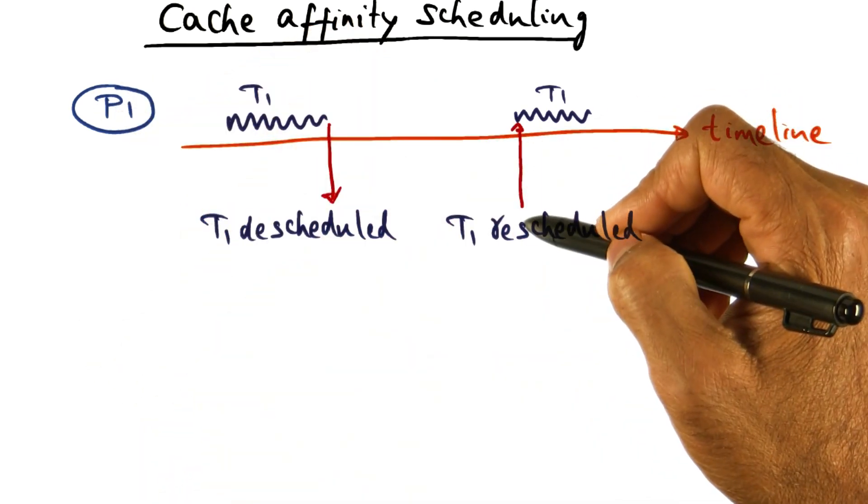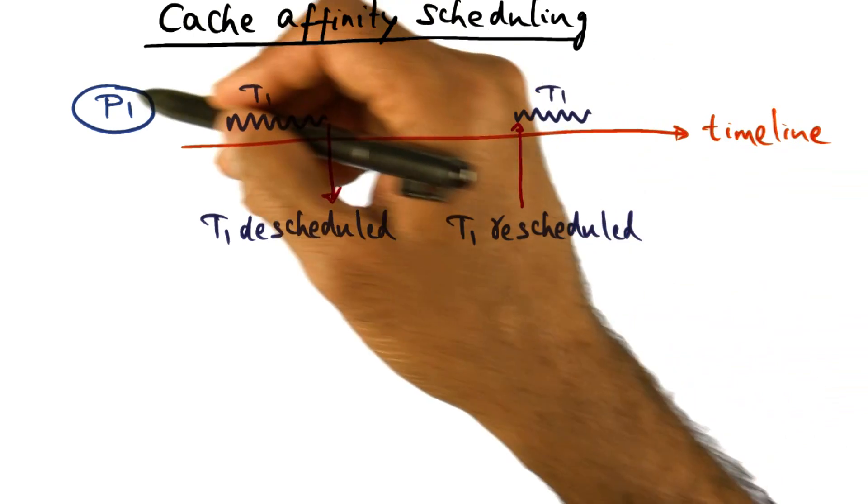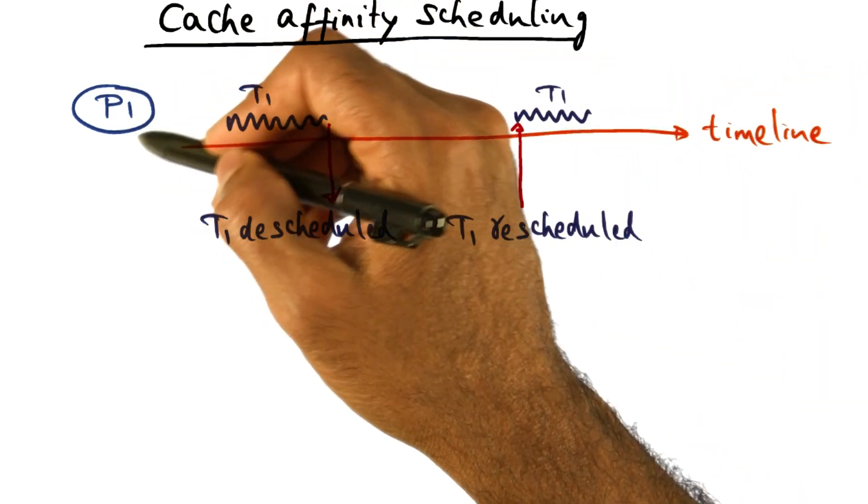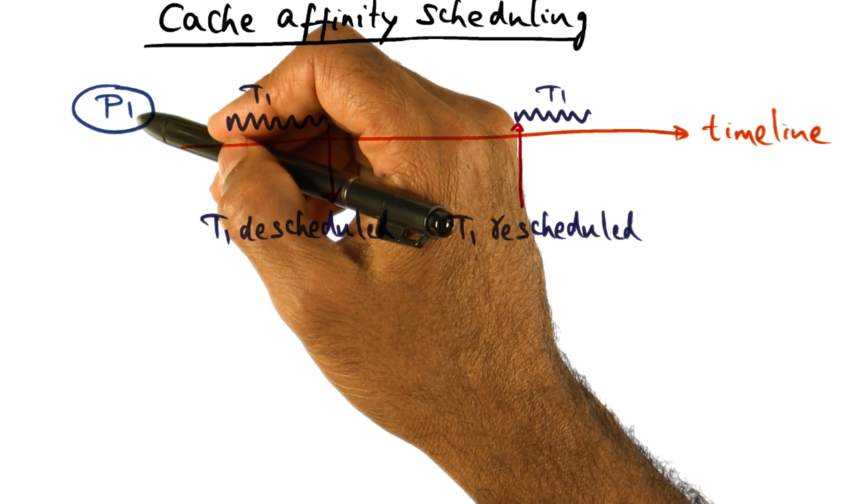And therefore, when T1 gets ready to run again, if I schedule T1 on the same processor, it is likely that T1 will find its working set in the caches of P1.